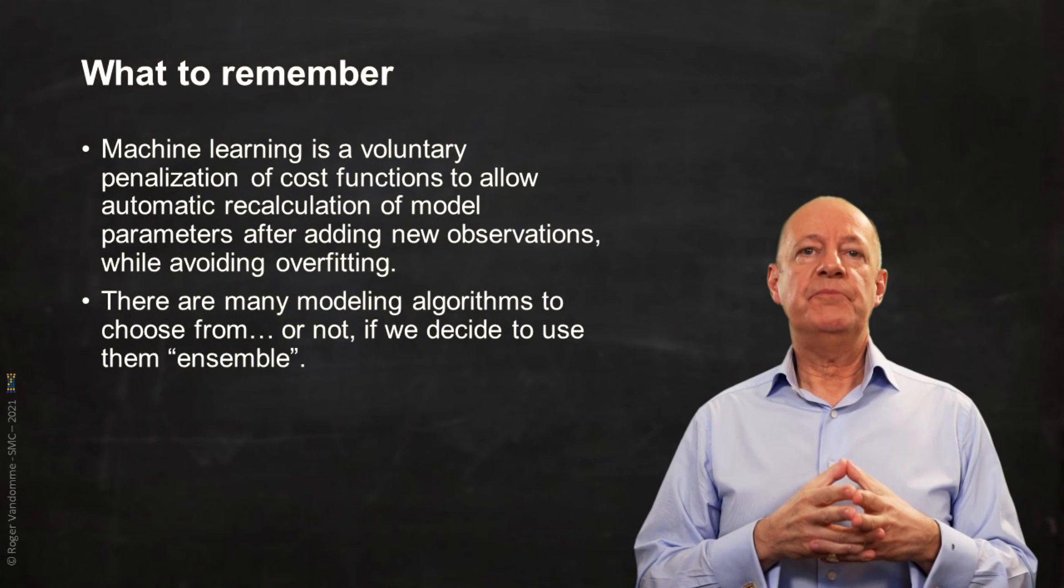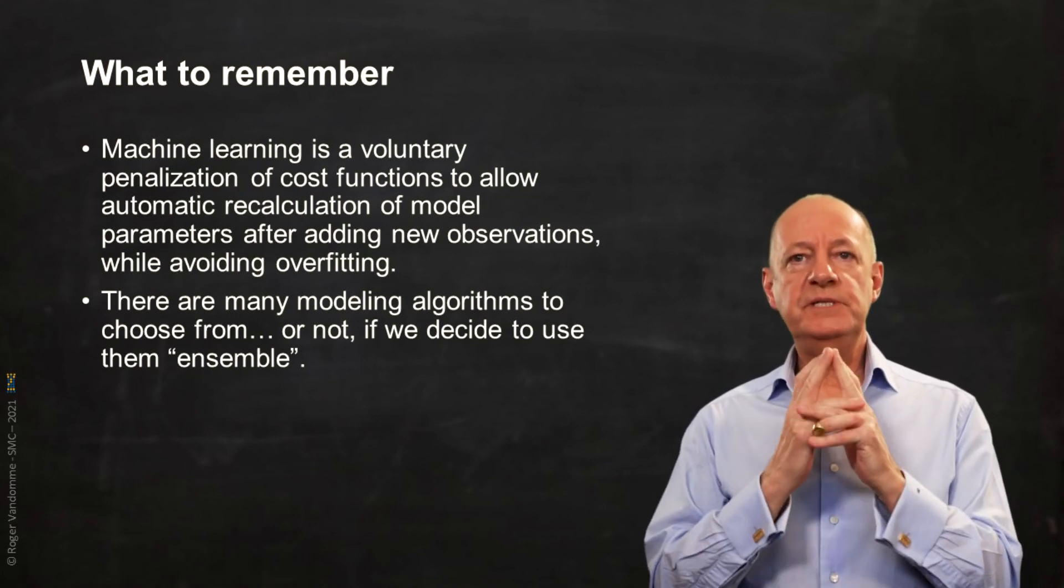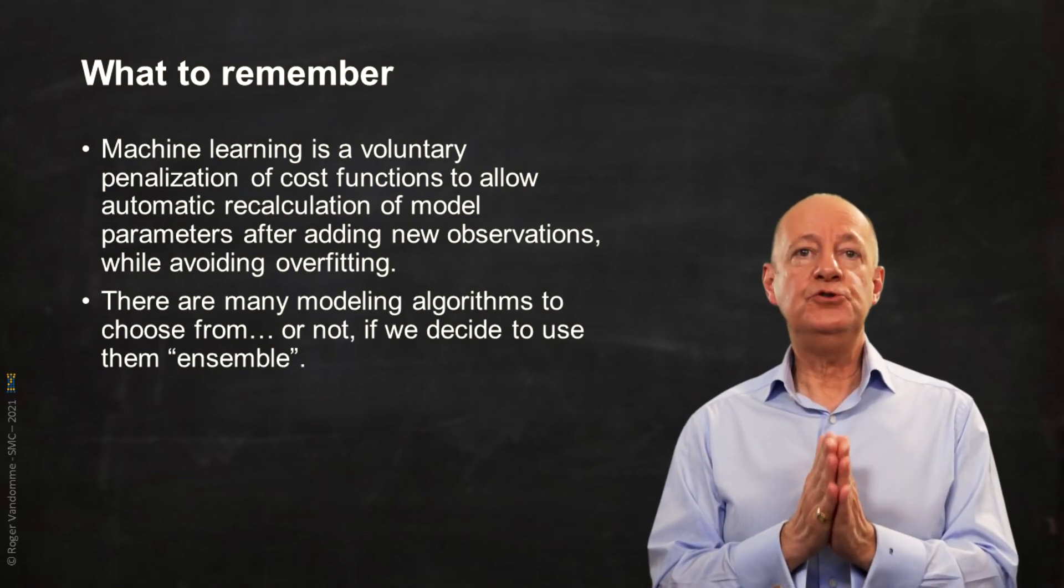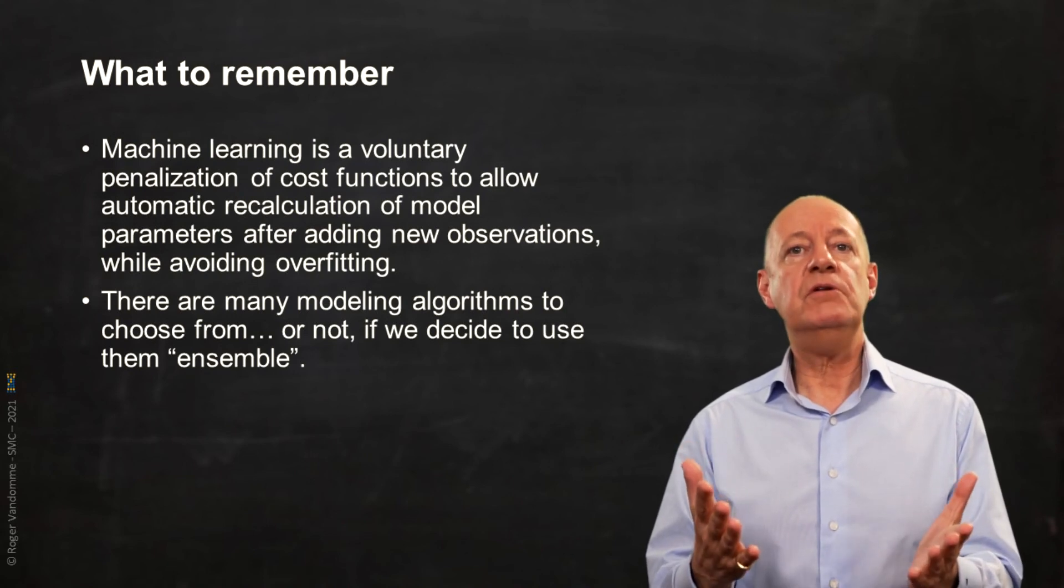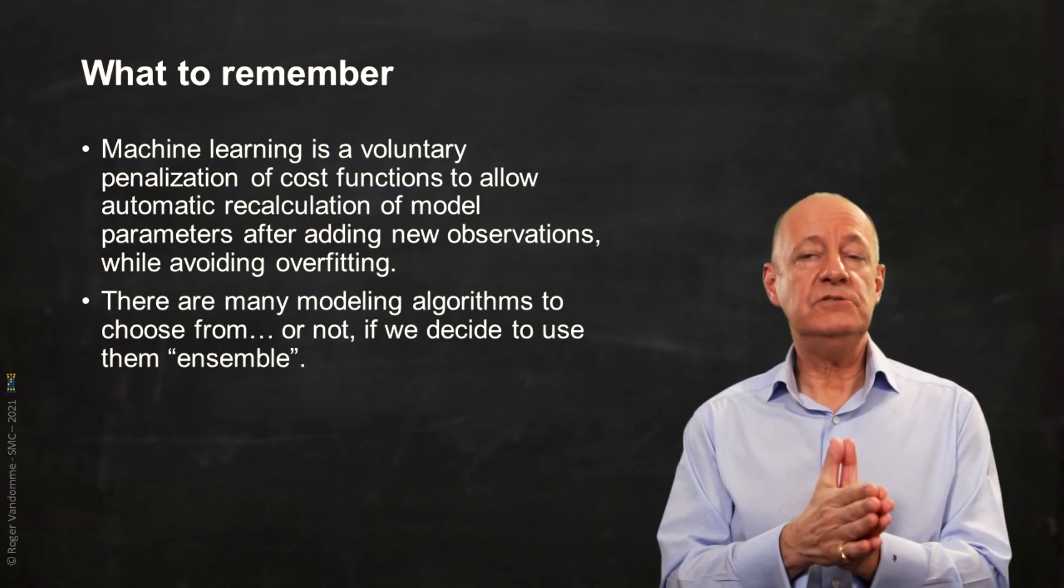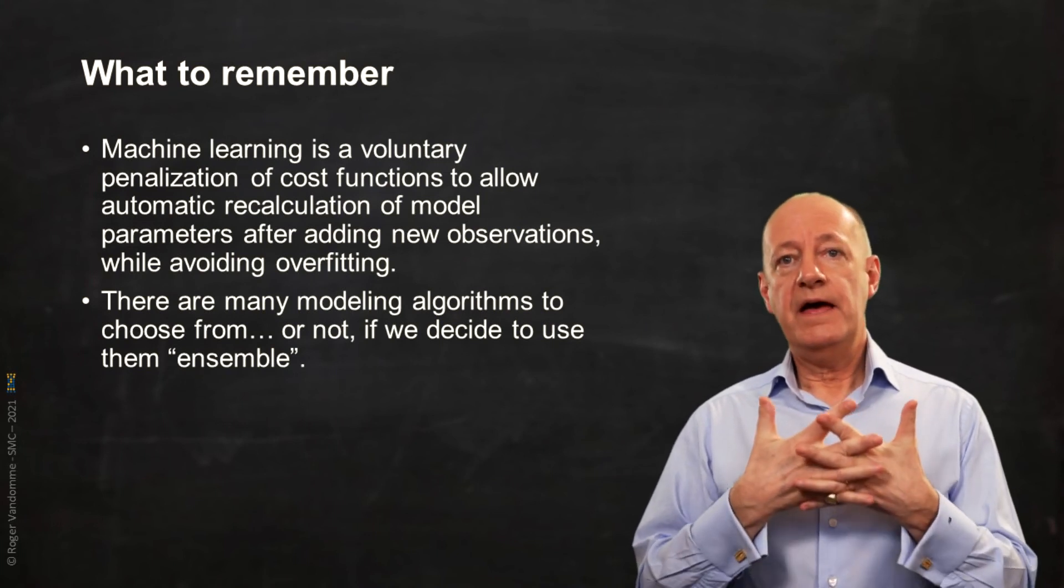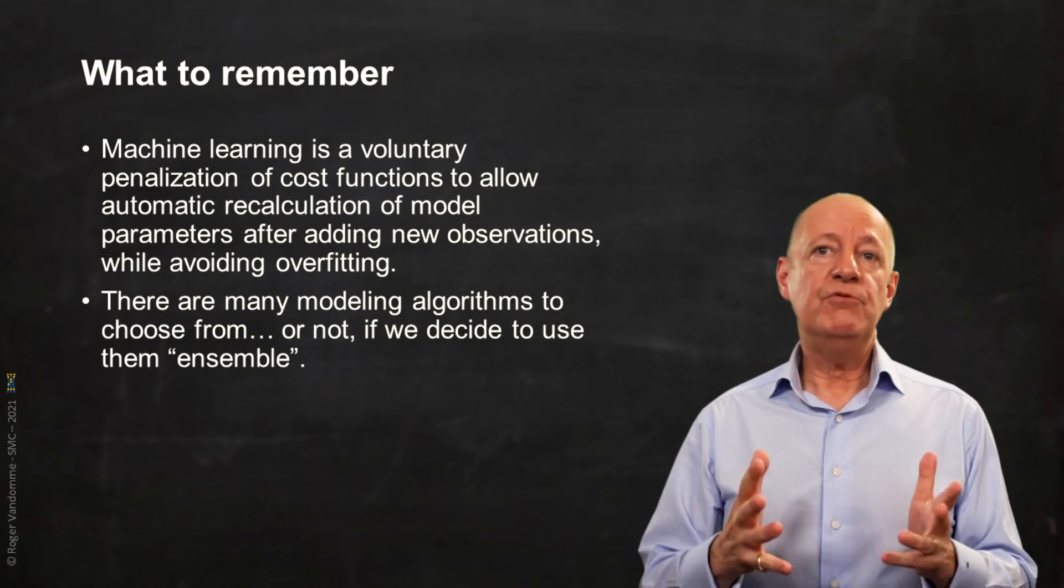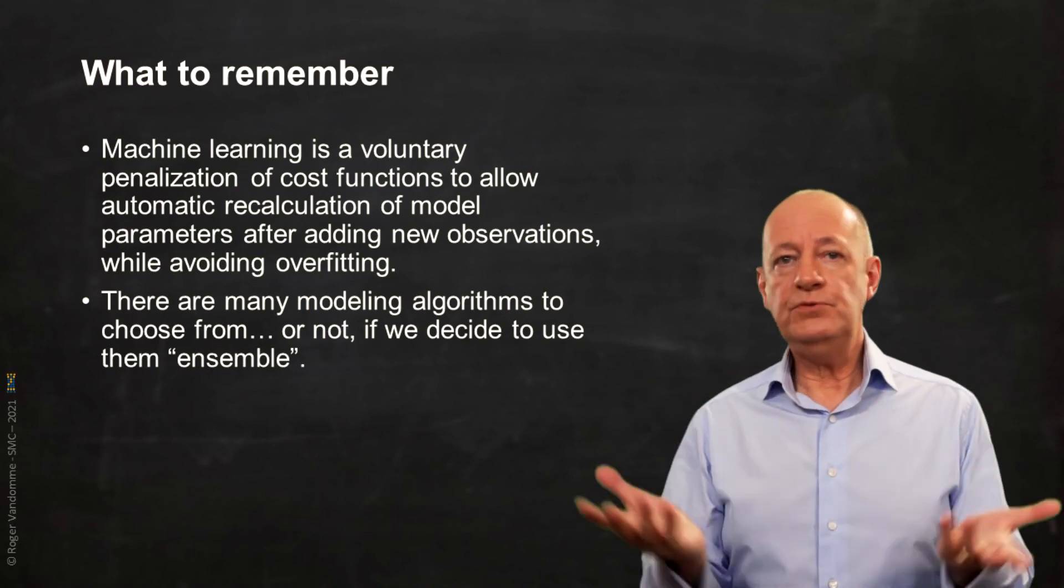What we should remember is that machine learning is a voluntary penalization of our cost function in order to allow an automatic recalculation of the parameters of the model after adding new observations while avoiding overfitting. That there are many modeling algorithms from which we will have to choose or not if we decide to use them altogether.